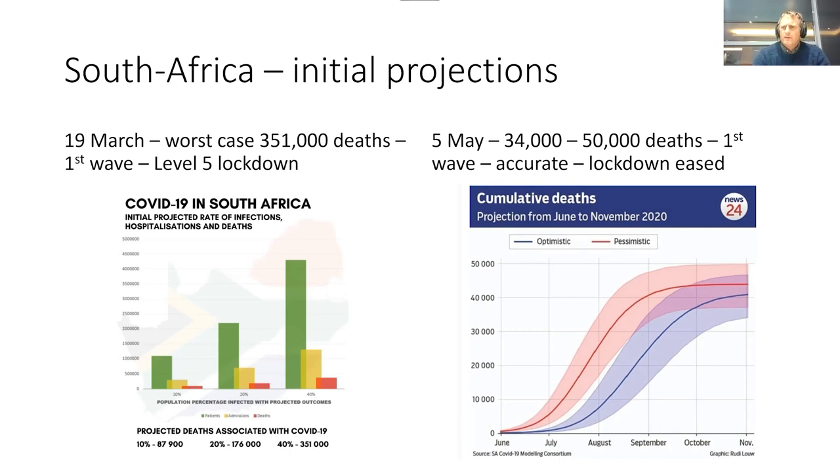By the 5th of May, the official modelers in South Africa brought the numbers down to between 34 and 50,000 deaths. This was an accurate prediction. By that stage, lockdown was being eased. In South Africa, which is a developing country, we simply do not have the ability to lock down. For many people, they would run out of food very quickly under a lockdown scenario. So within a month and a half, numbers were reasonable and accurate. It had an impact on the government's policies.